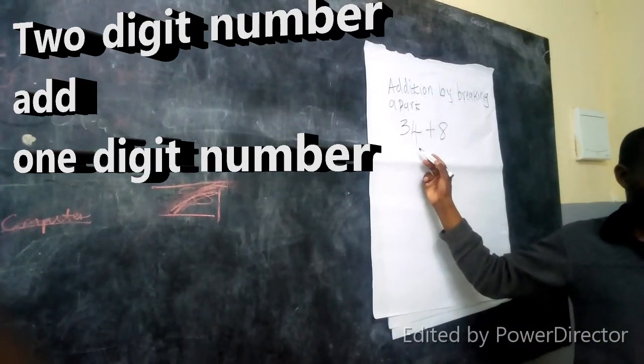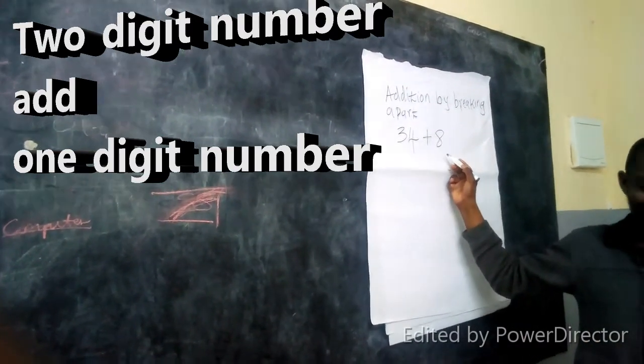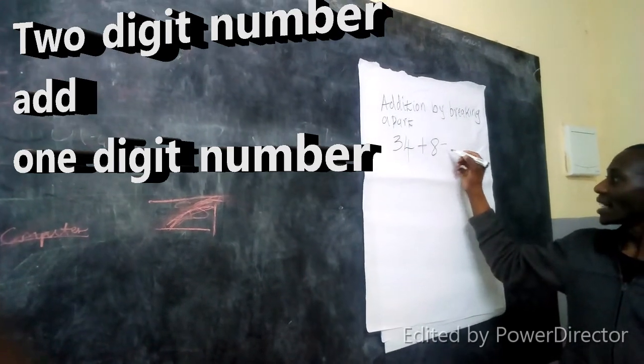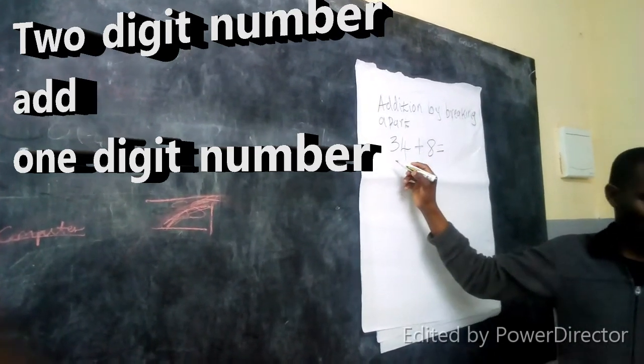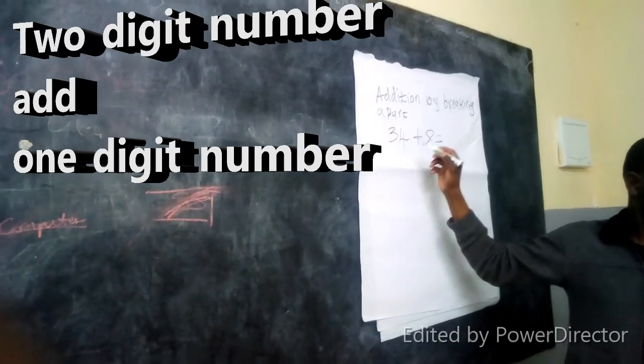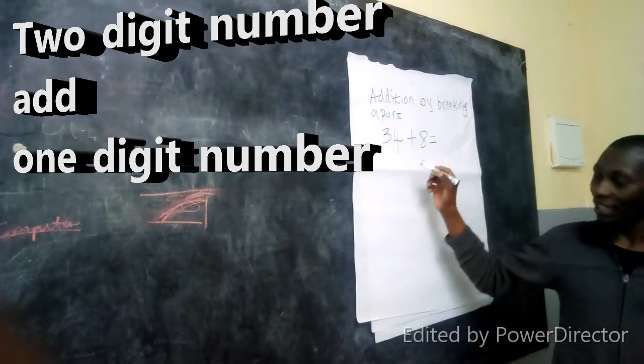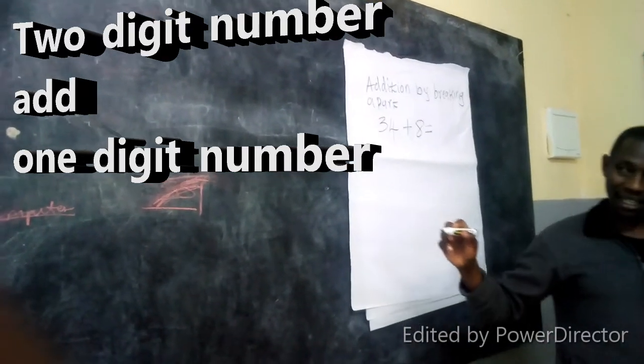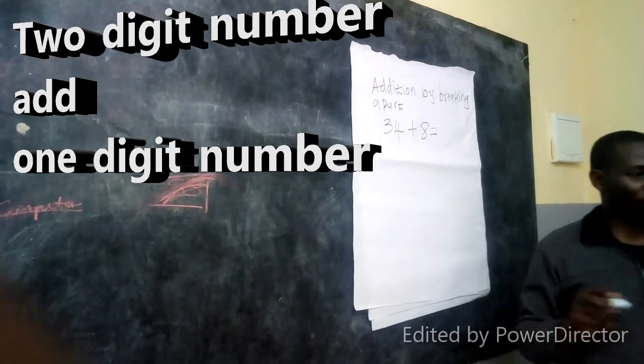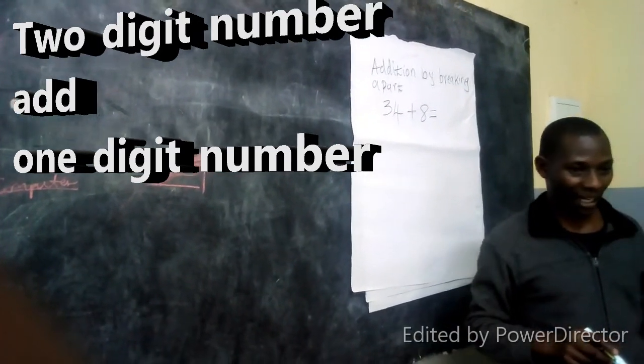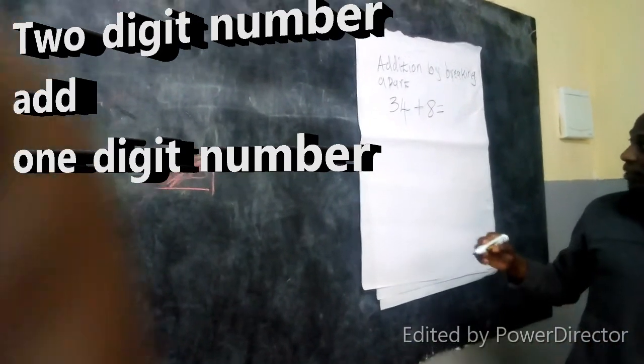Which number is this? 4. And this one? 8. Yeah, that is 4 plus 8. That is 4 put together with 8. So the first thing we have seen is that you know the partners of 10. And you say partners of 10. Partners of 10.